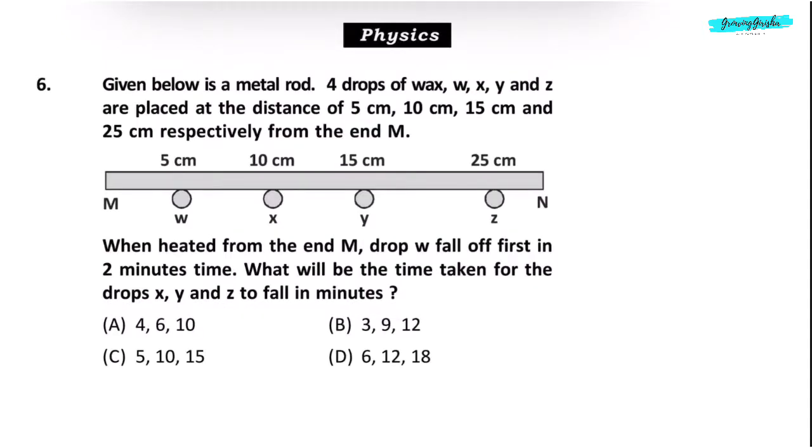Physics Question 6. Given below is a metal rod. 4 drops of wax W, X, Y, and Z are placed at the distance of 5 cm, 10 cm, 15 cm, and 25 cm respectively from the end M. When heated from the end M, drop W falls off first in 2 minutes. What will be the time taken for the drops X, Y, and Z to fall in minutes?